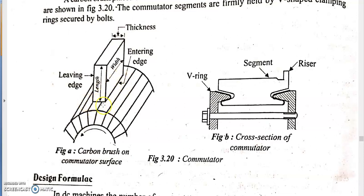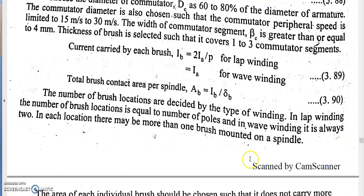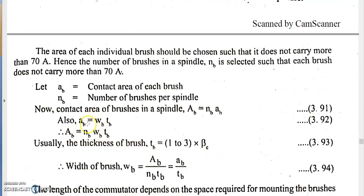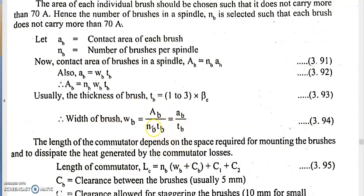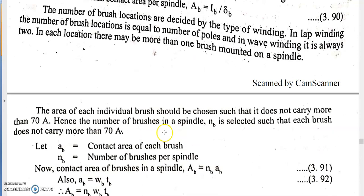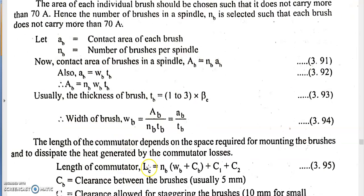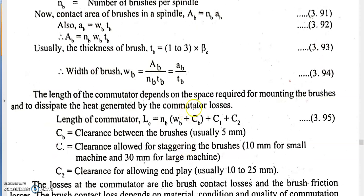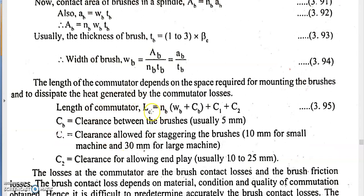The dimensions of the brushes — thickness, width, and cross-sectional area — are now determined. Finally, the length of the commutator LC is calculated using the formula: LC = NB × WB + (NB − 1) × CB + C1 + C2, where NB is the number of brushes, WB is the width of the brush, CB is the clearance between brushes (5 mm), C1 is the clearance for staggering the brushes, and C2 is the clearance for the end plane.